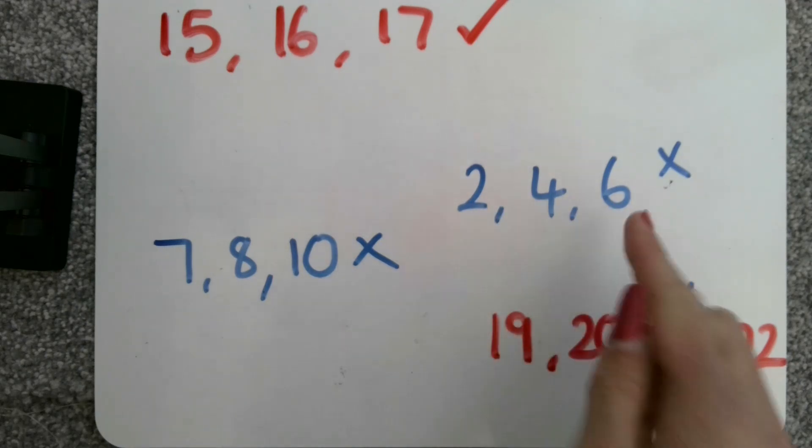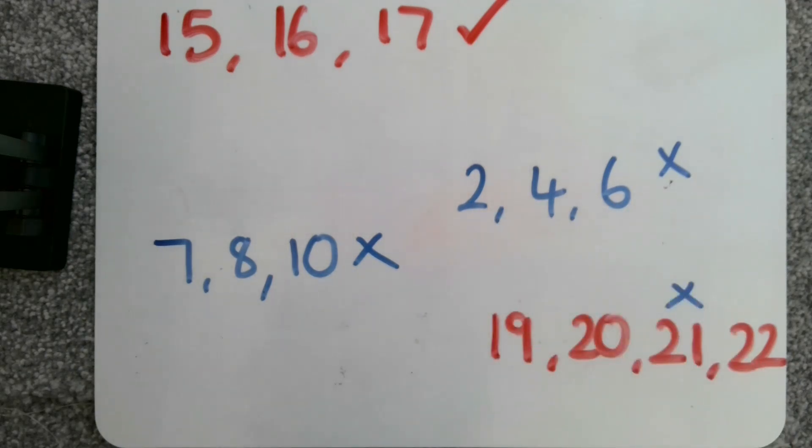Because two, four, and six aren't going up in steps of one. They're going up in steps of two. Seven, eight, and ten aren't going up in steps of one. Nineteen, twenty, twenty-one, and twenty-two are consecutive. They go up in ones each time. But I wanted three consecutive numbers and that's showing four consecutive numbers.